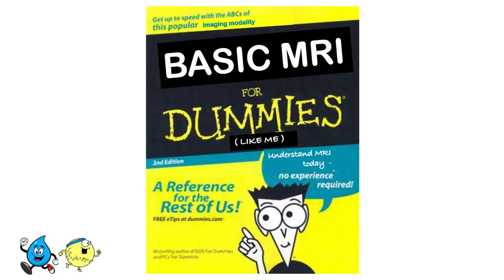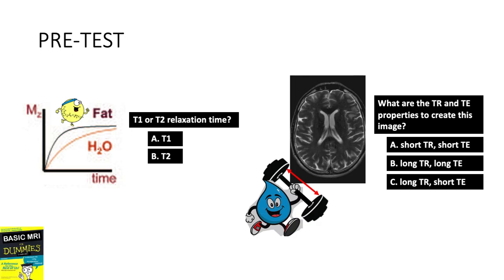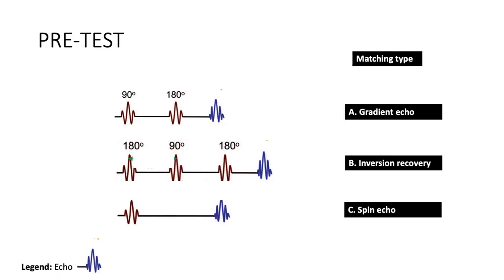After this lecture, hopefully you will be able to answer the following five questions. Number one, this graph shows T1 or T2 relaxation time. Number two, what are the TR and TE properties to create this image? Numbers 3 to 5, matching type — what pulse sequences do these diagrams represent?